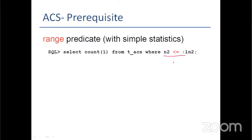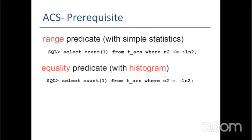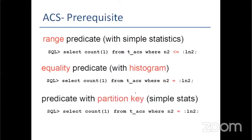I know three cases under which a cursor can be marked bind sensitive. The first is when we use a range predicate on a column having simple statistics. The second condition is when we use an equality predicate on a column having a histogram. And the last one is when we use a predicate on a partition key of a partitioned table. The underlying cursor will be marked bind sensitive. Three simple conditions: range predicate with simple statistics, equality predicate with a histogram, and a predicate involving the partition key.